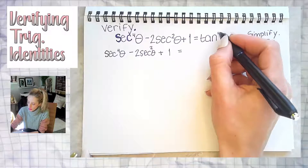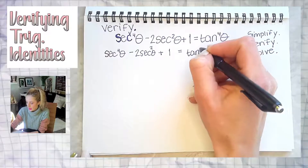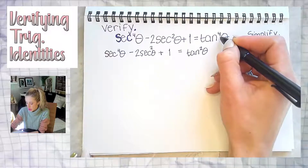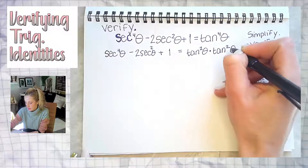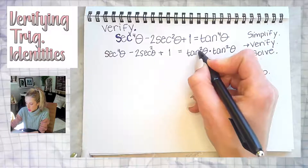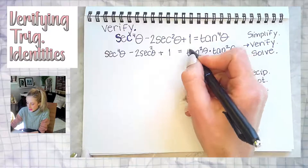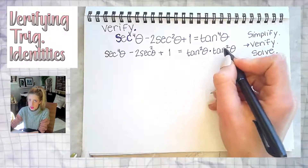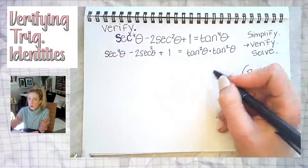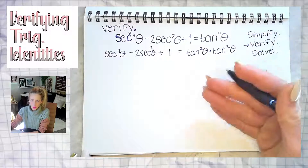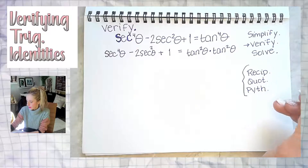Tan to the fourth theta is not directly on the trig identities list, but tangent squared theta is. So I'm going to change tan⁴θ into tan²θ times tan²θ — when you multiply the same trig function you add exponents, and two plus two is four. Alternatively, you could write it as (tan²θ)², since raising a power to a power means you multiply exponents, and two times two is also four.